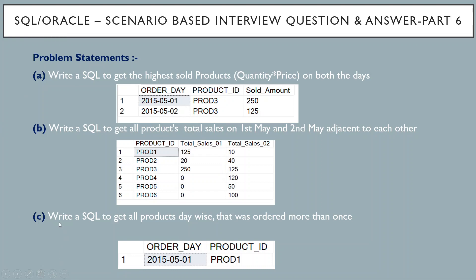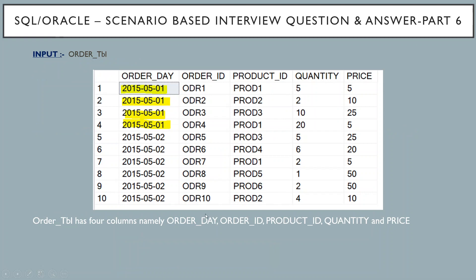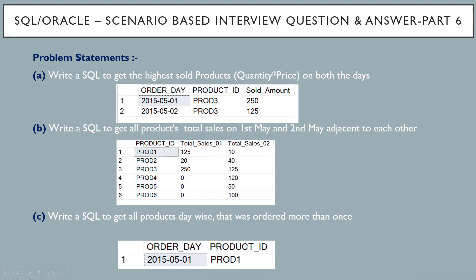The third question is a very basic question: write a SQL query to get all the products day-wise that were ordered more than once. We have to display only those product IDs which were sold more than once, checked day-wise. If we go back to the main table, product number 1 got a sale 2 times on 1st May itself, that's why it comes in our output table. All other products were not sold 2 times in a day, so no other product ID appears in the output table. These 3 questions we will now solve by writing SQL queries.